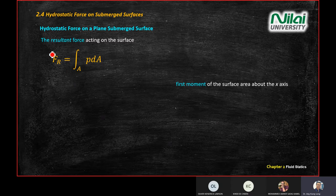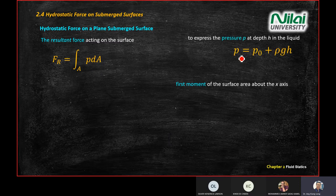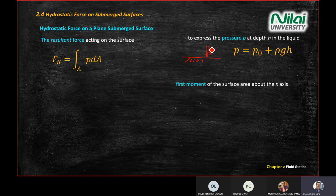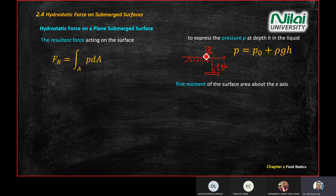The resultant force equals the integration of pressure over the area. Pressure equals P₀ + ρgH, considering atmospheric pressure. You substitute this in and integrate. Sometimes the question asks you to consider atmospheric pressure, sometimes not — there's a catch here where you need to carefully look at the question.